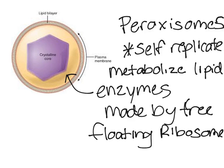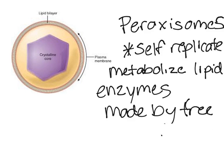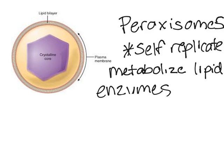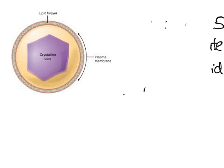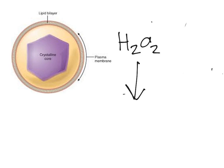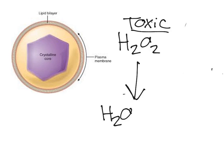The most important feature that peroxisomes are known for is that they help convert hydrogen peroxide, H2O2, which is toxic to the body, into water, H2O, as well as oxygen. So they essentially detoxify the environment.